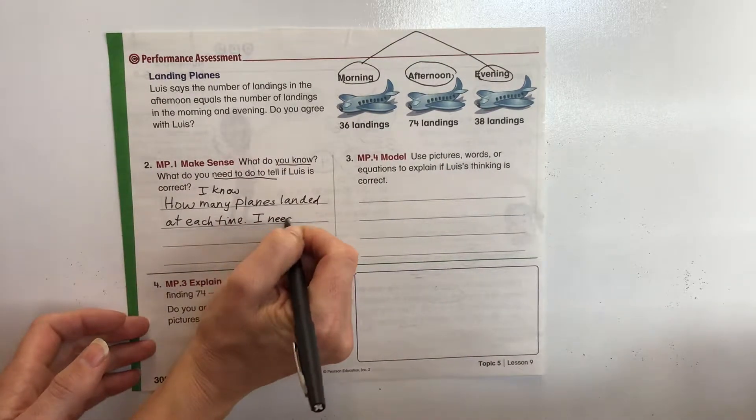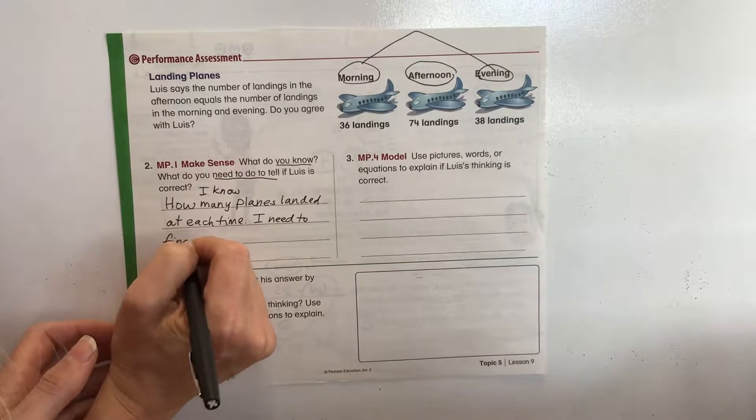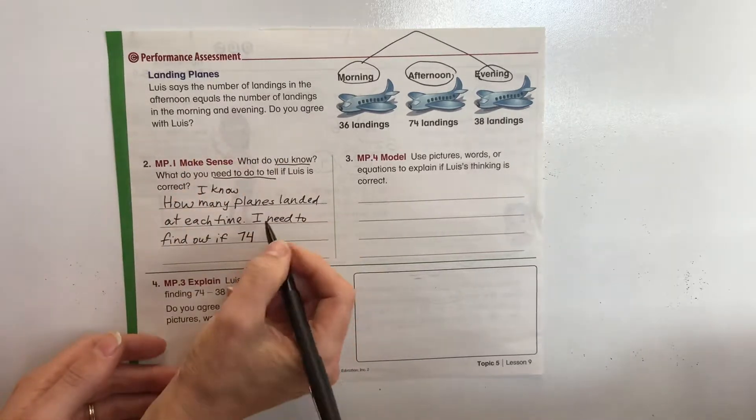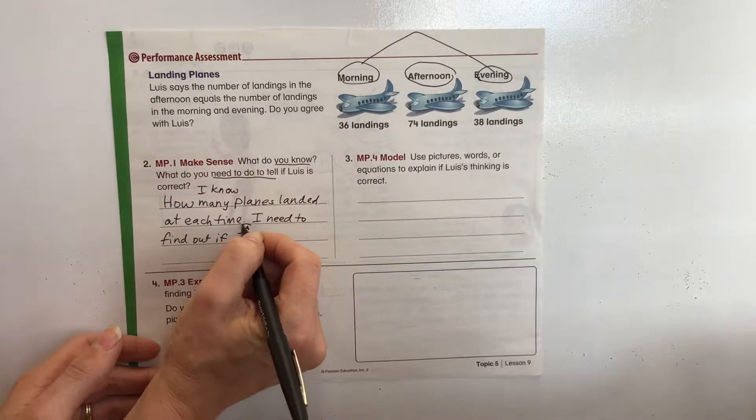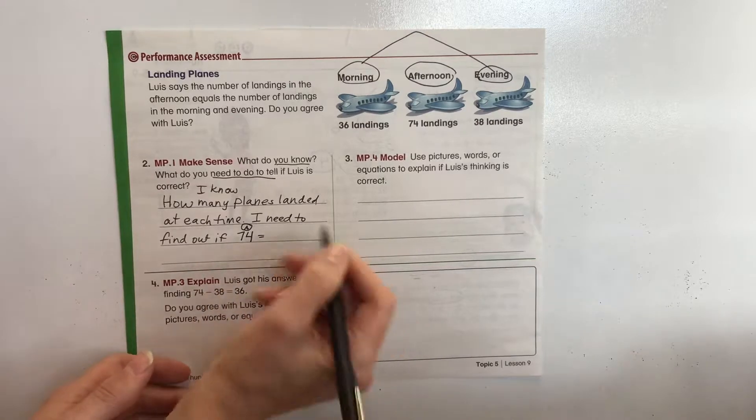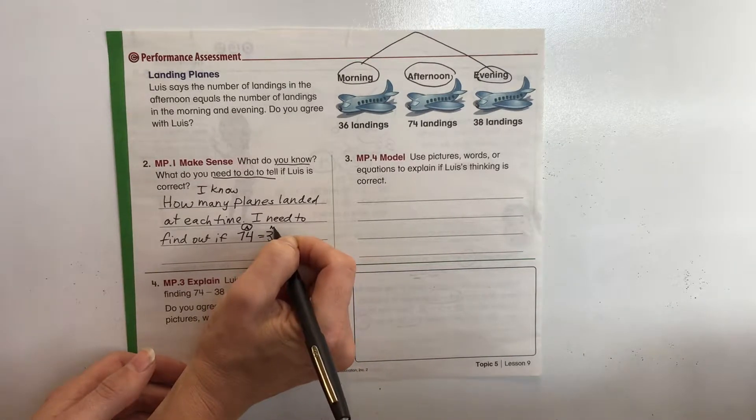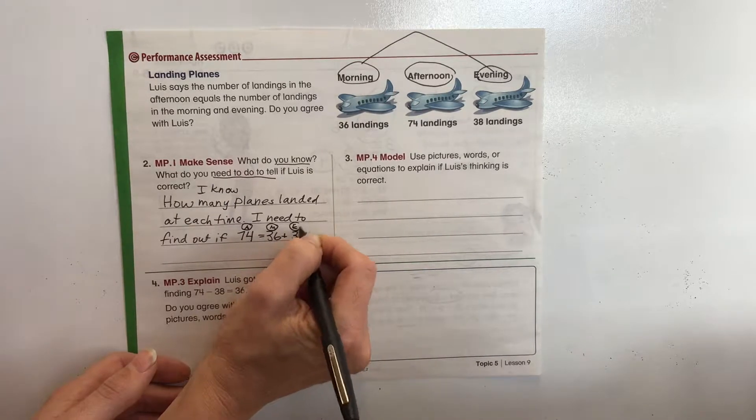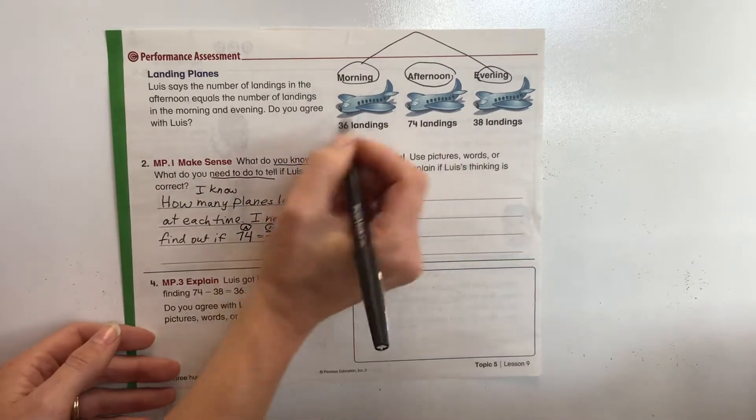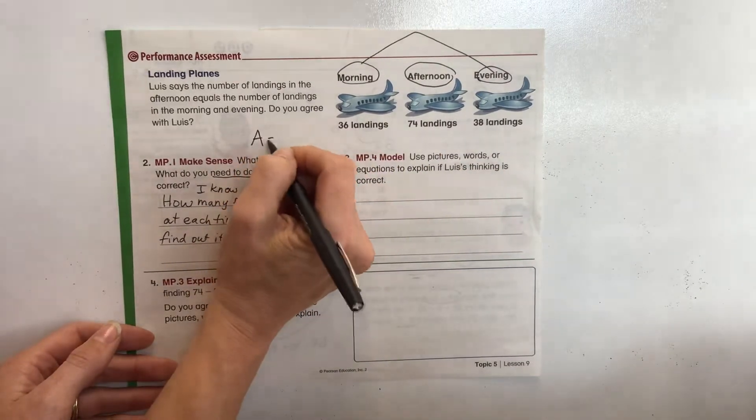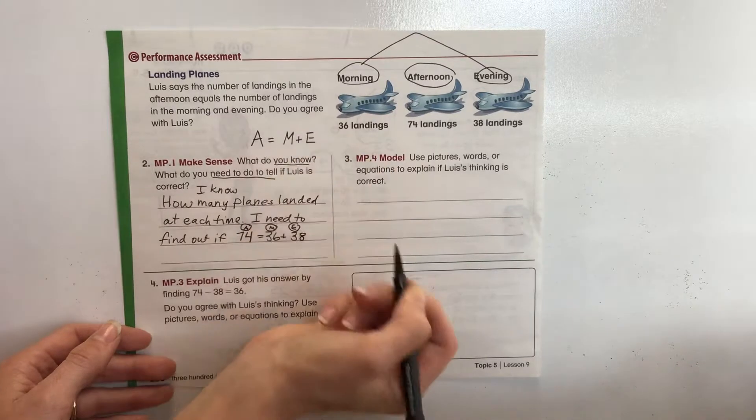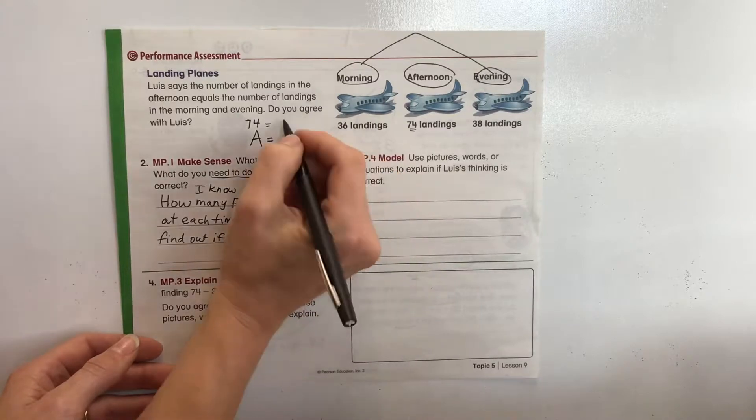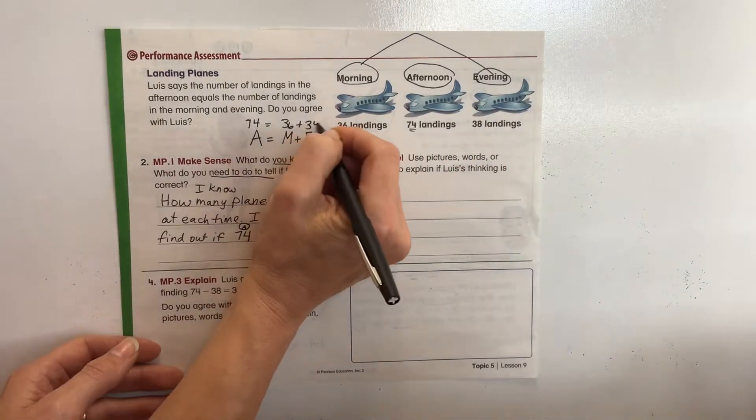So I need to find out if 74, because I'm going to put an A for afternoon equals 36, M for morning, plus 38, E for evening. So what they're basically saying is that afternoon equals morning plus evening. So we plug it in. Afternoon is 74, equals 36 plus 38.